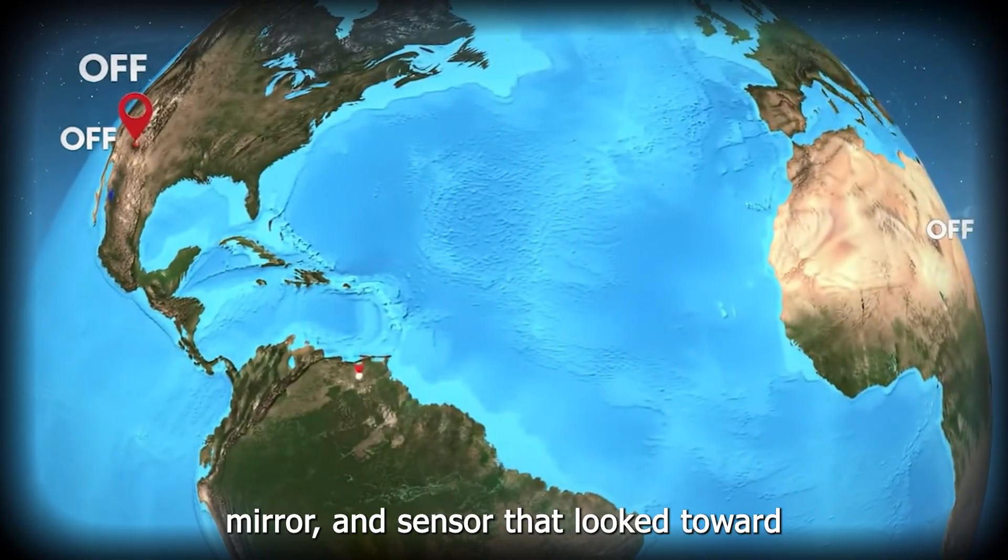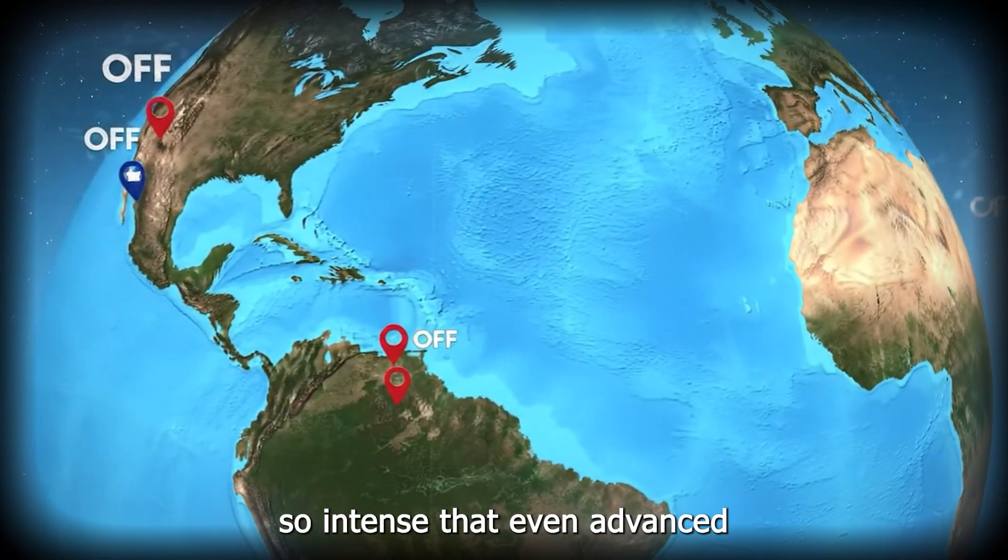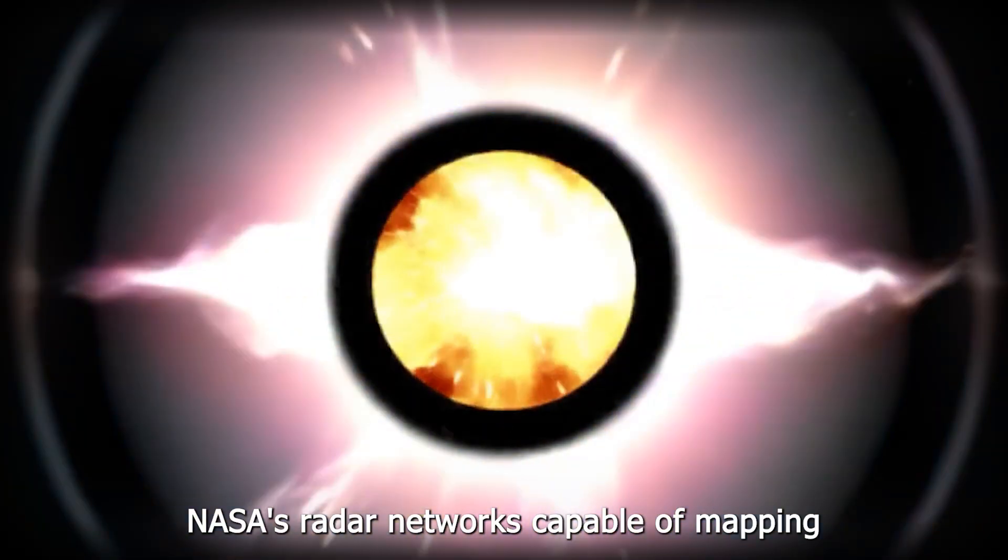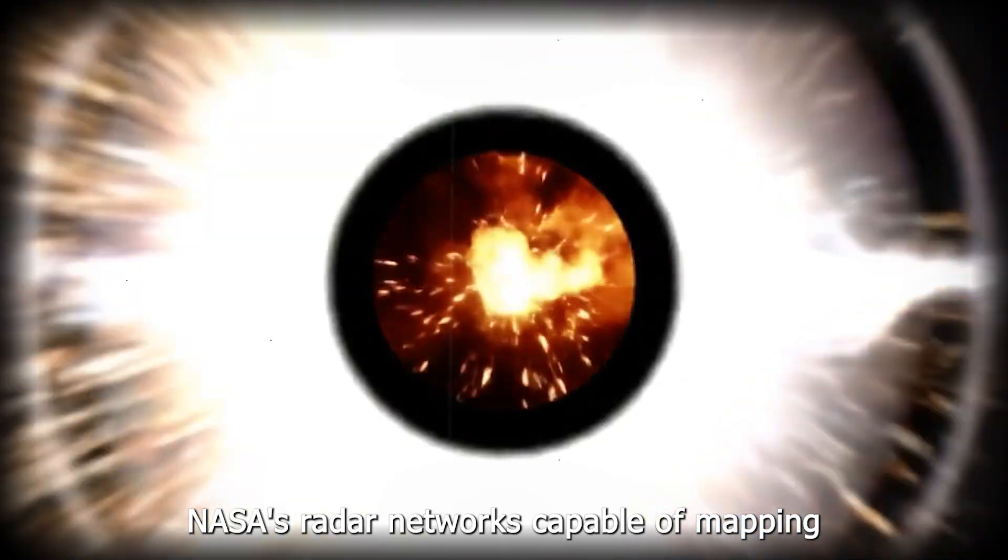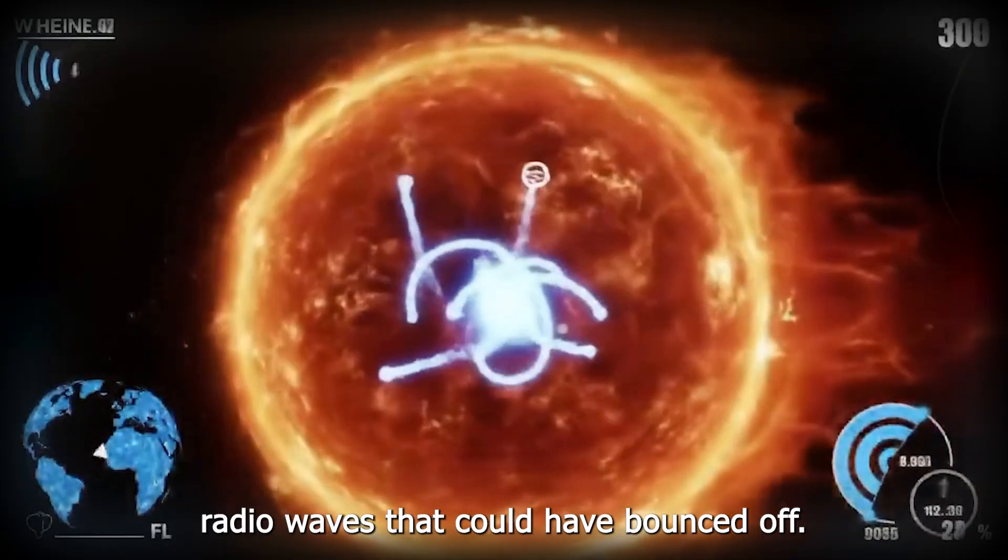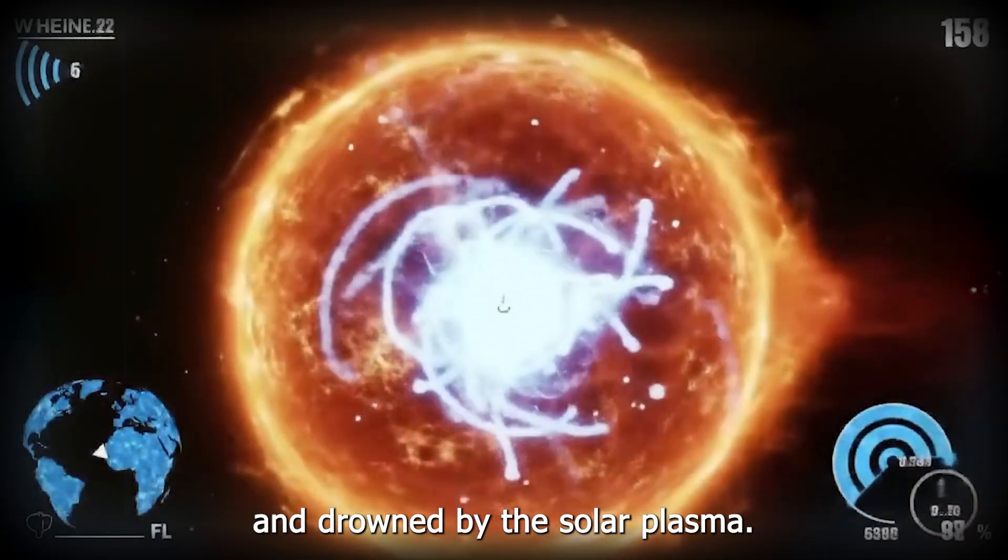Every lens, mirror, and sensor that looked toward it was instantly flooded with daylight, so intense that even advanced filters burned out their signal. NASA's radar networks, capable of mapping distant asteroids, were useless too. Radio waves that could have bounced off 3i Atlas were scattered and drowned by solar plasma.